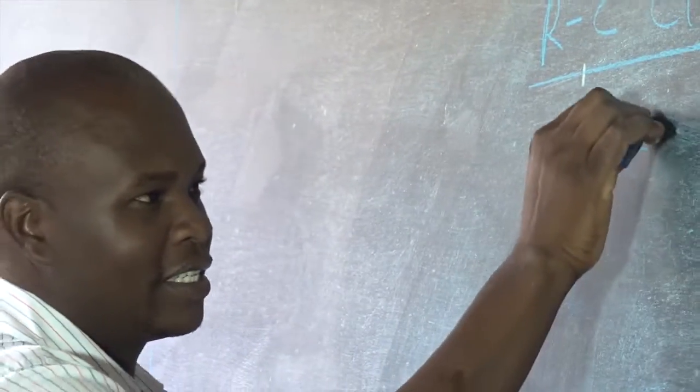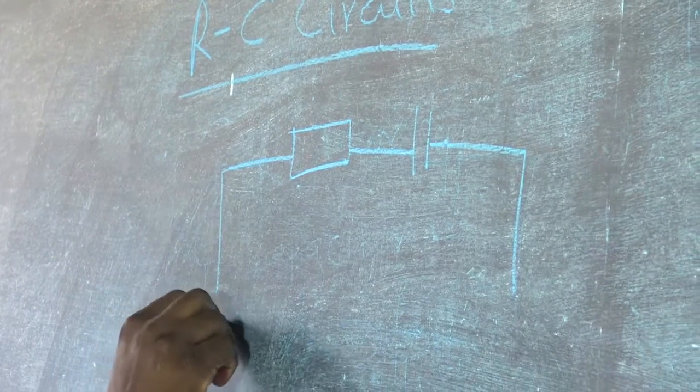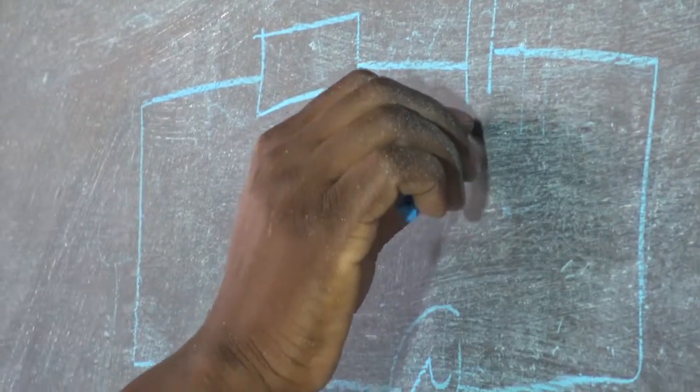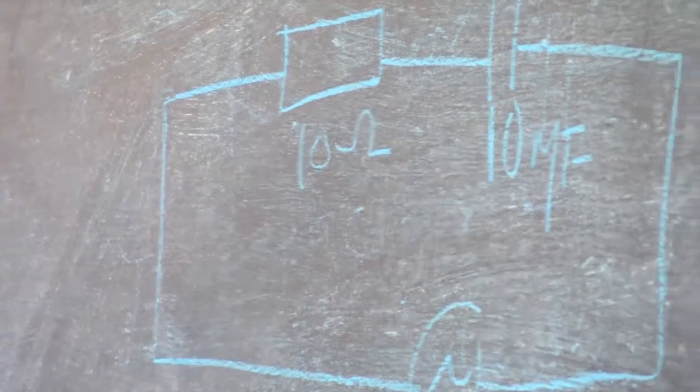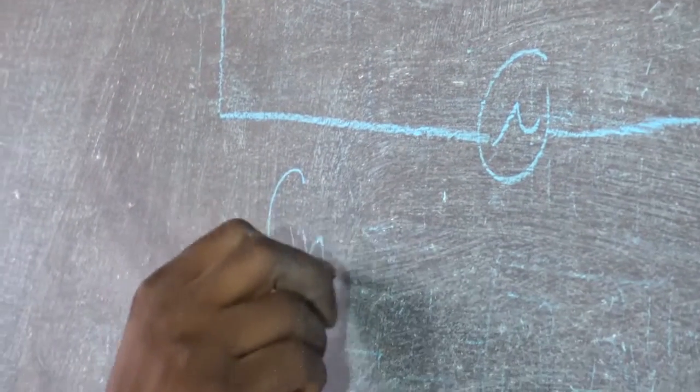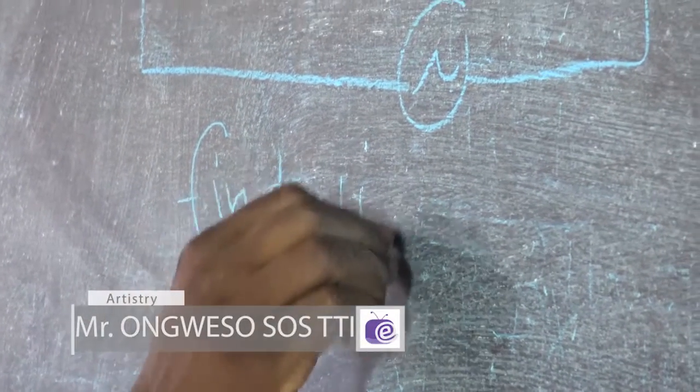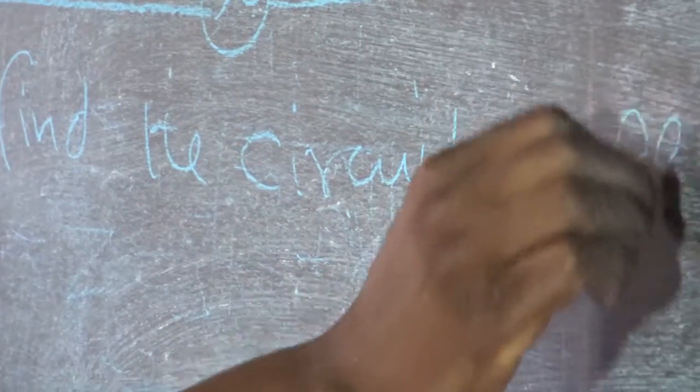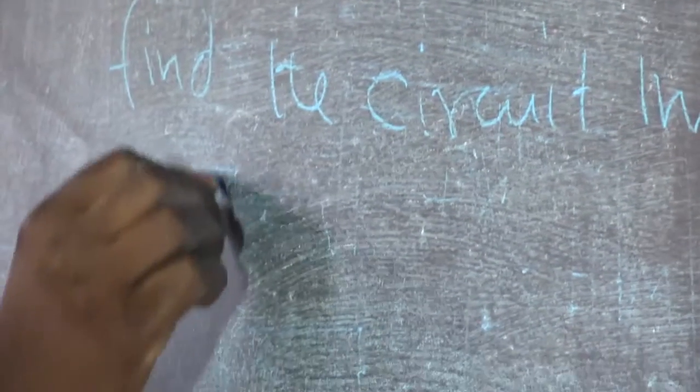If this is 10 microfarad, this is 10 ohms. Now you are being asked to find the capacitive reactance, the impedance, and the current in the circuit.